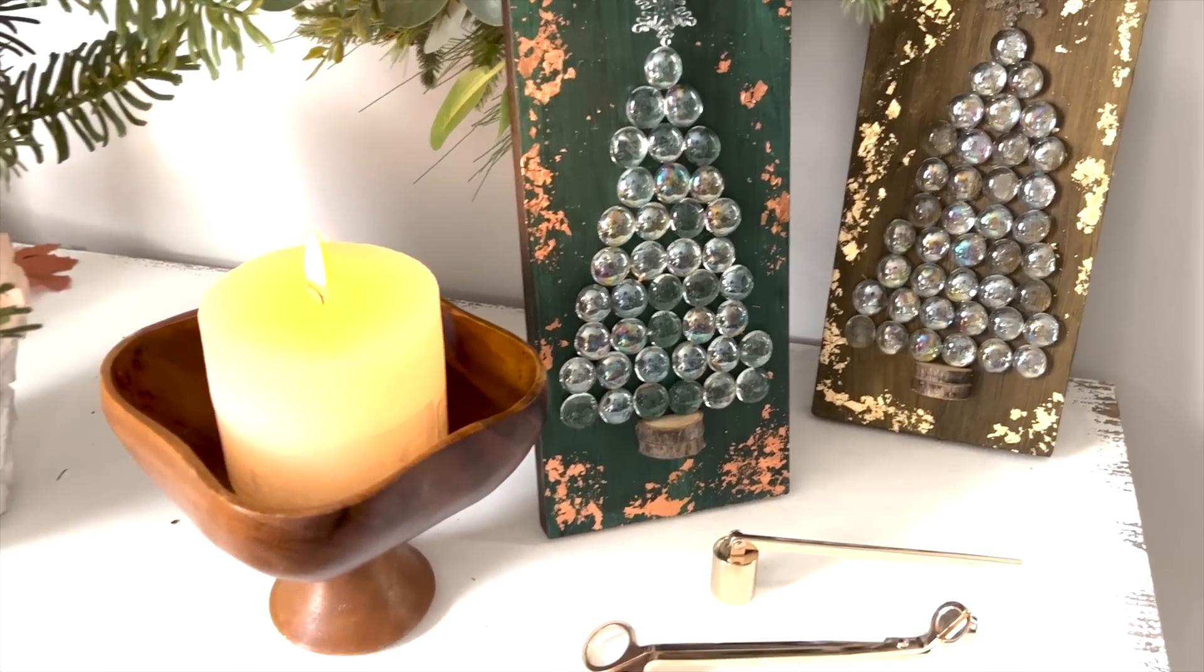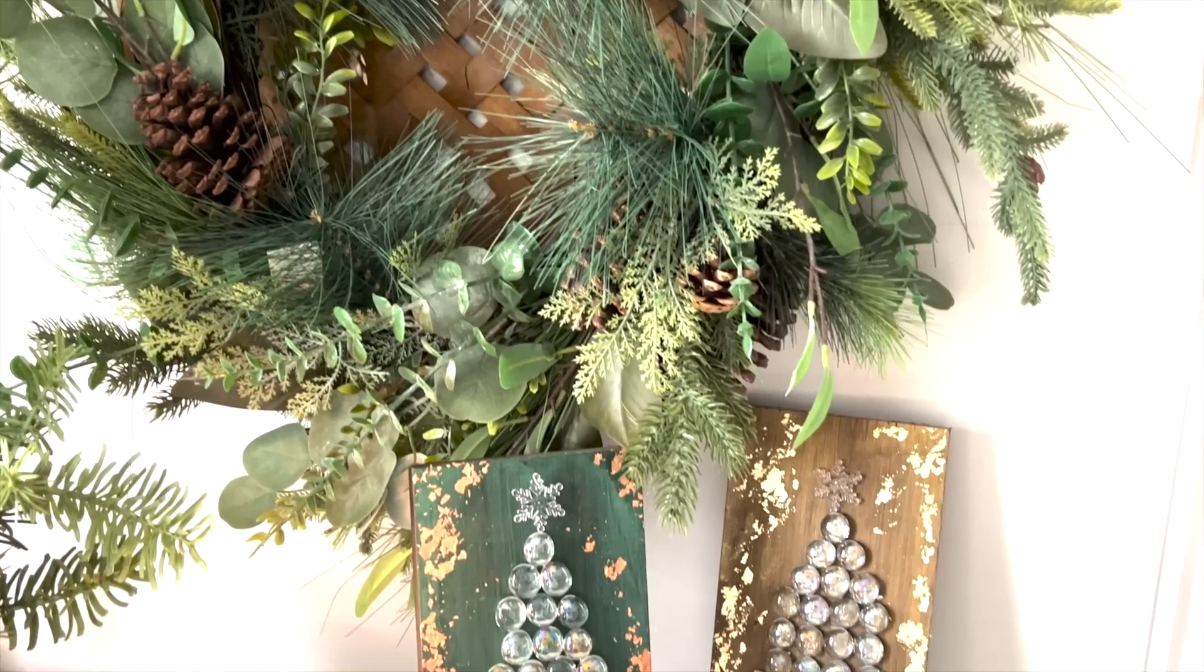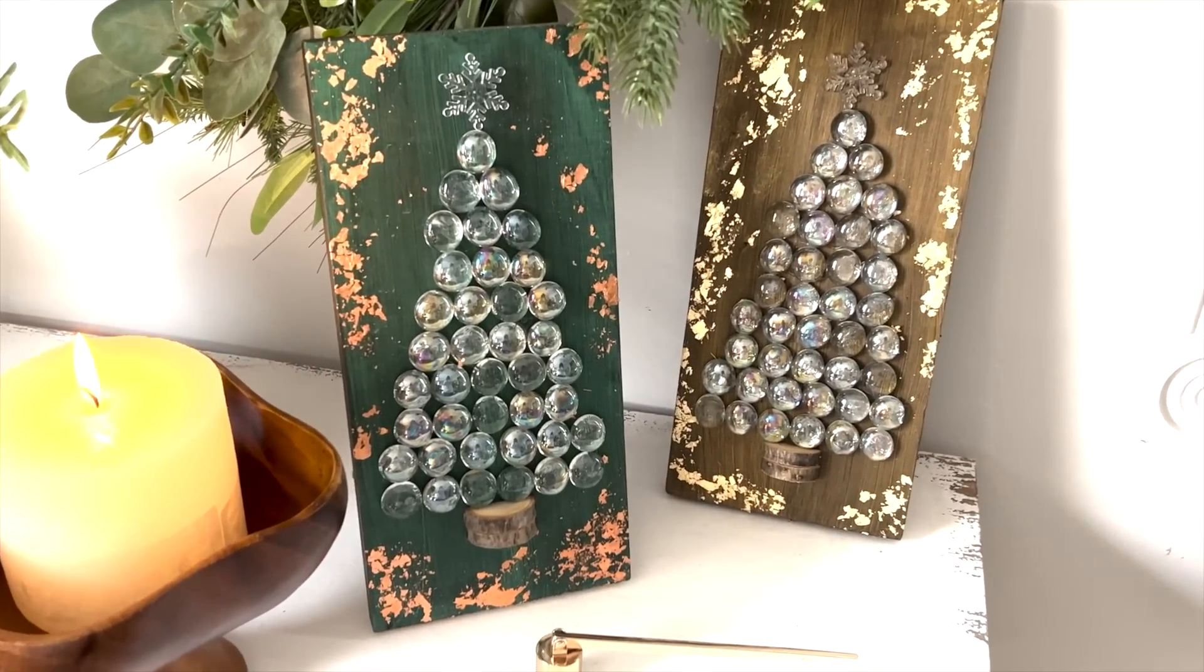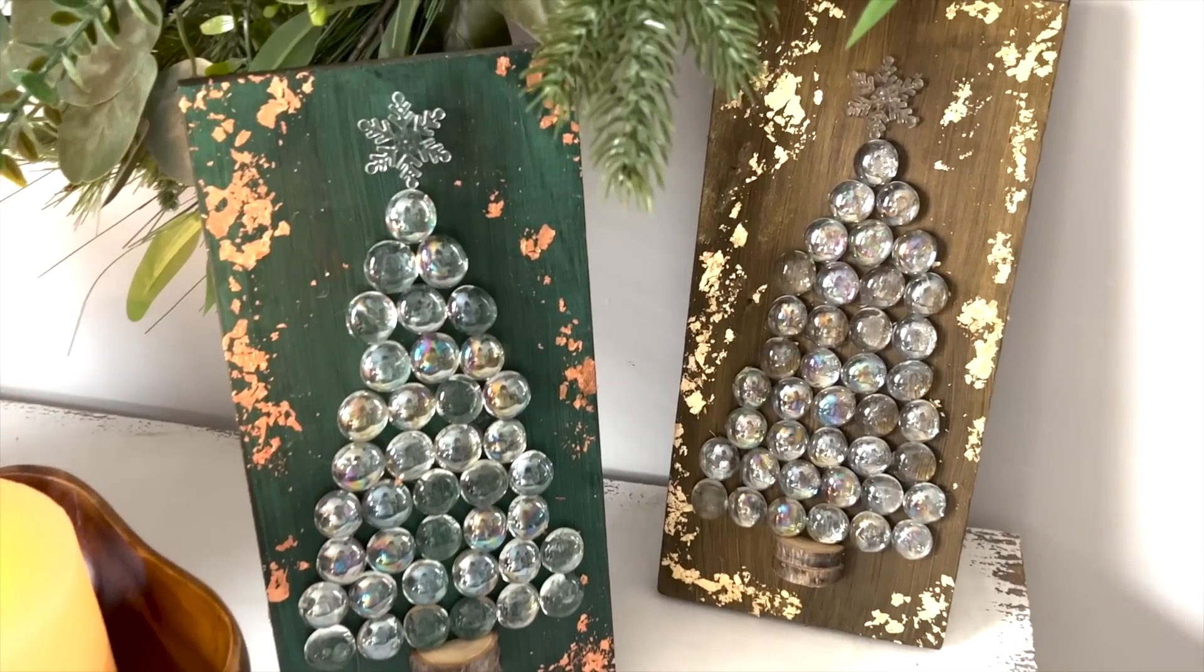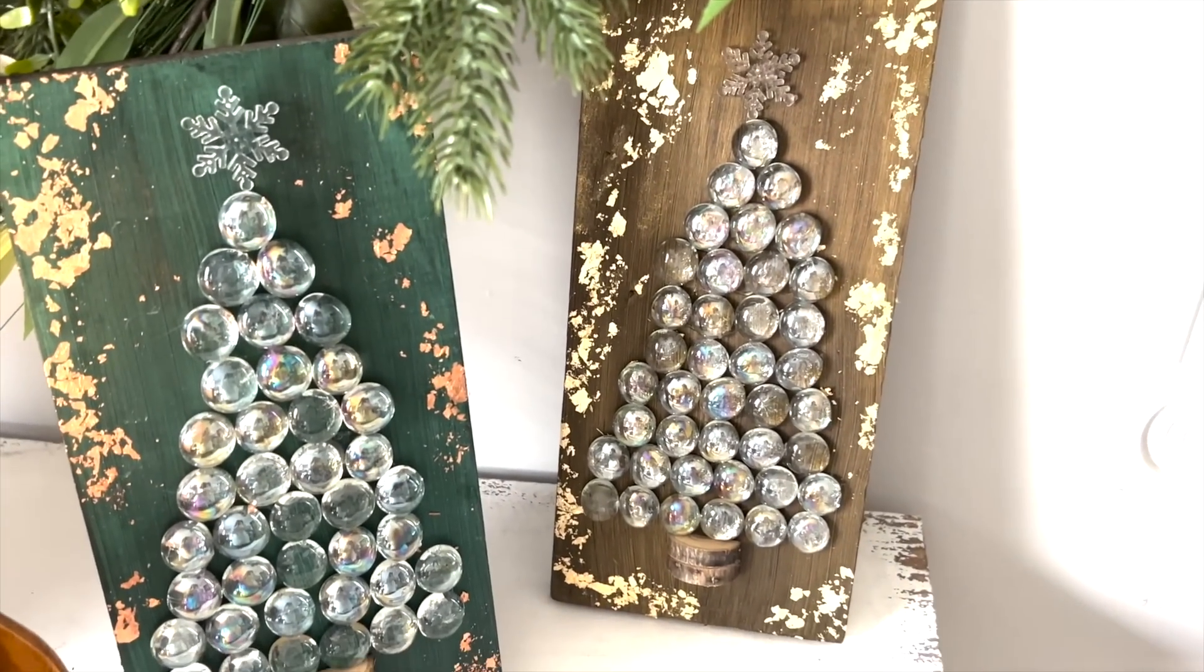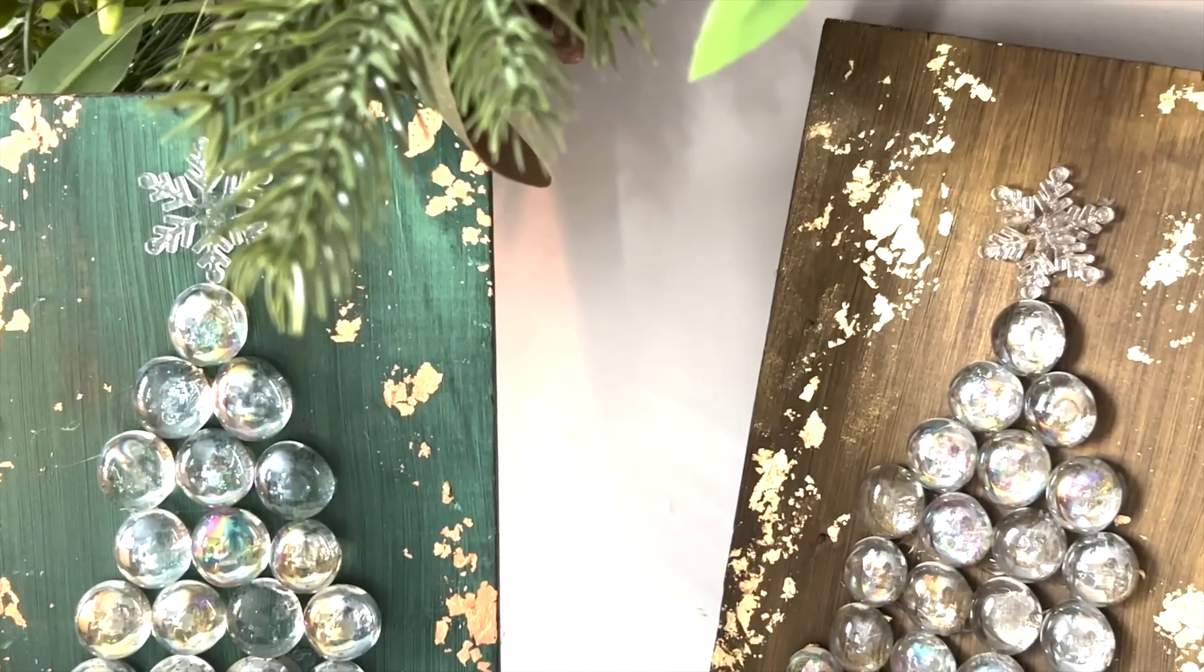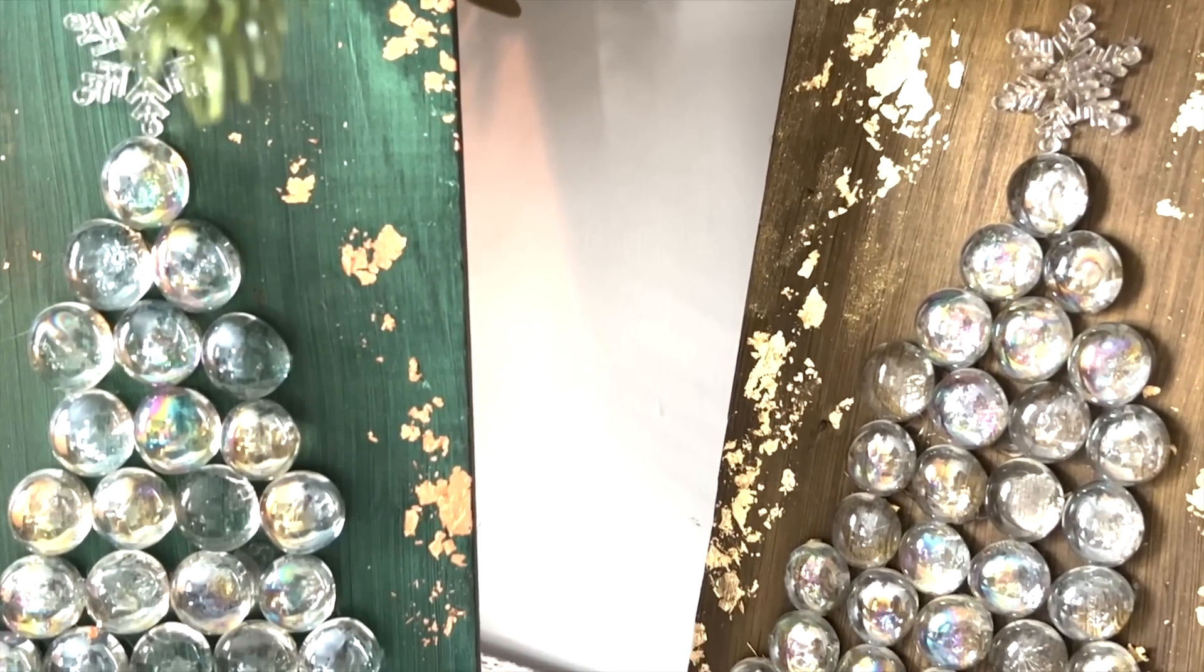And these are my finished projects here, so you can see the one I did here with the green iridescent and then the gold as well. On the green iridescent I decided to go with rose gold leafing instead of the gold. I just thought it complemented the green iridescent better, and I'm so happy with how this project turned out.